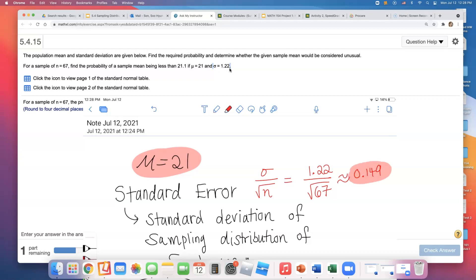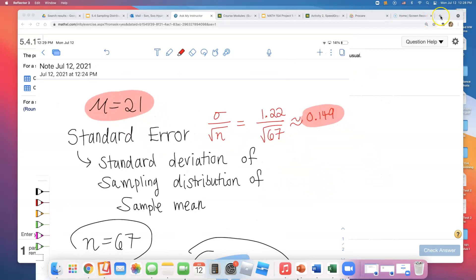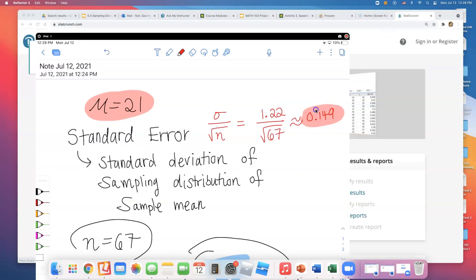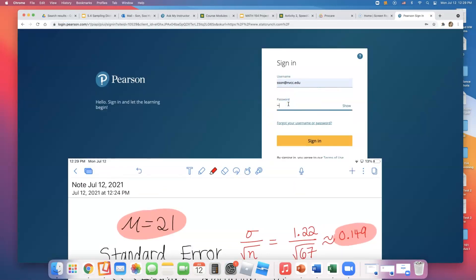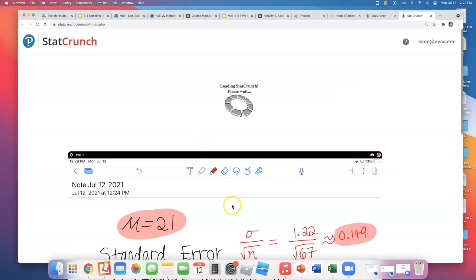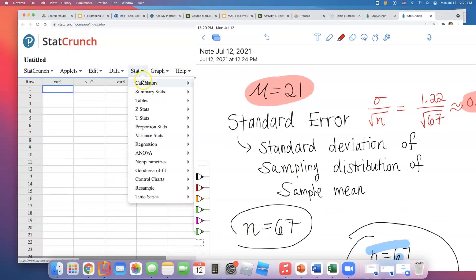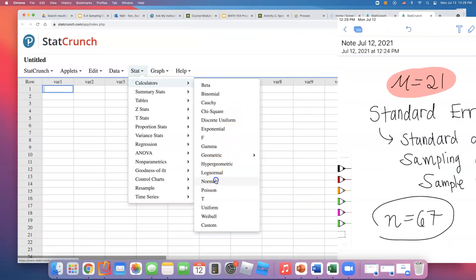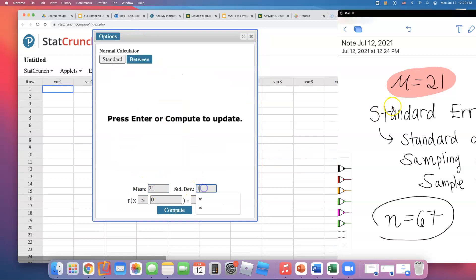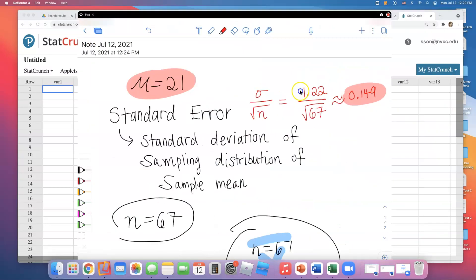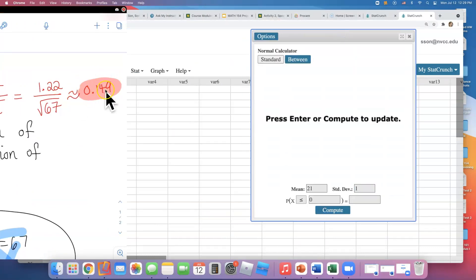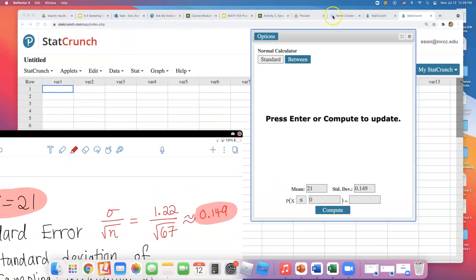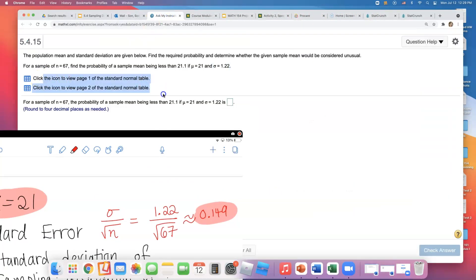These are the two numbers to use in the StatCrunch normal calculator. I'll sign in to StatCrunch, then go to Stat, Calculator, Normal. I type in the mean of 21. The standard deviation is not 1.22 - that was the population standard deviation. The standard error of sample means is 0.149.